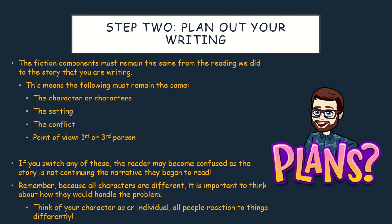The components that we looked at in class and will continue to analyze are the characters, the setting, the conflict, and the point of view, which is typically first or third person. When you pay attention to these qualities in the story, keeping them steady and consistent from one to the other allows the story to finish. If you switch any of these, the reader will become confused and probably won't want to continue reading. Remember, all characters are different, so it's important to think about how they would handle the problem. Think of them as an individual — all people react differently to new things. Consider how this character is different and how they're going to react to the different problems that come up in the story.